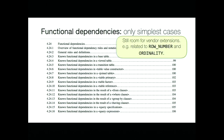That was the first part: features that exist but are less conforming and less complete than in other databases. It was really hard to find those things, because generally Postgres is leading in standard conformance. Now let's look at the second part: features that are missing entirely.